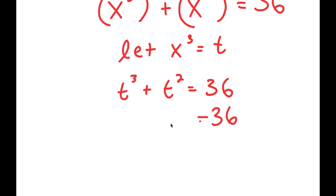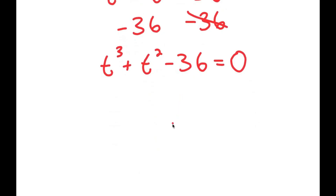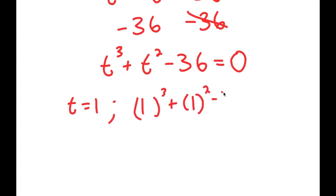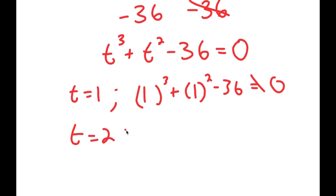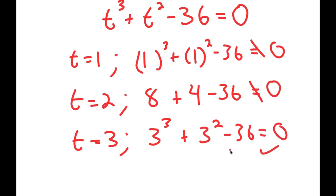If I subtract 36 from both sides, I get t to the power of 3 plus t squared minus 36 is equal to 0. To solve an equation like this, we first find one solution and use it to find the remaining solutions. We plug in numbers to test. If t equals 1, I get 1 cubed plus 1 squared minus 36, which does not equal 0. If t equals 2, I get 8 plus 4 minus 36, which also does not equal 0. If t equals 3, I get 3 cubed plus 3 squared minus 36, which does equal 0. So t equals 3 is a solution.